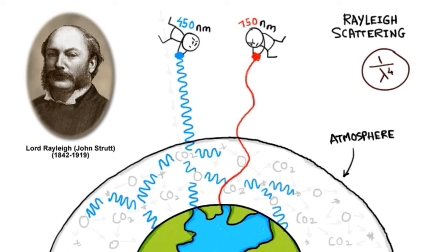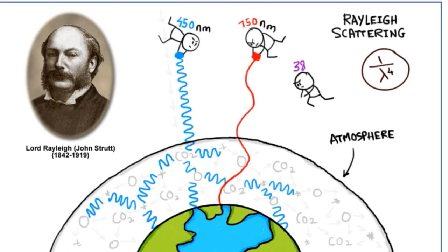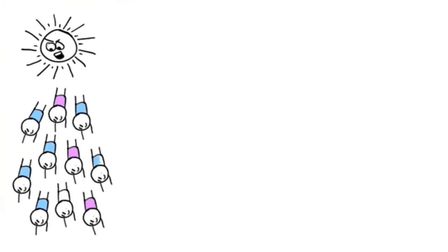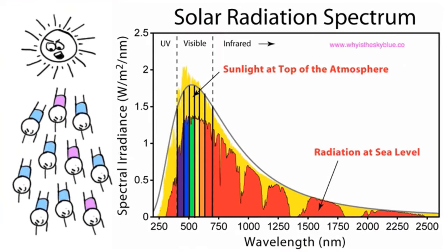But wait a minute. Violet light has an even shorter wavelength than blue. So why isn't the sky violet? This is because the sun itself sends out less of violet and more of blue. Check out this solar radiation spectrum. As you can see, the amount of energy is peak in the blue wavelength and drops dramatically for violet wavelengths.